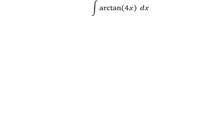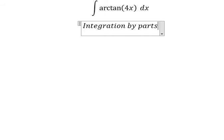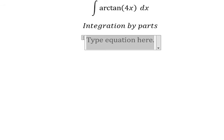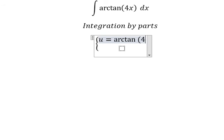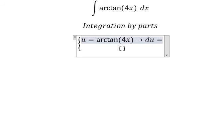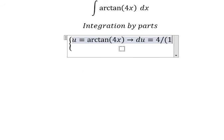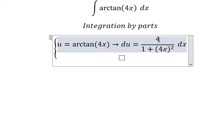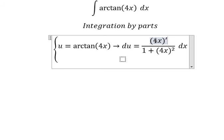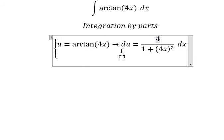Hello everybody, so today I want to show you how to answer this one. We can use integration by parts, so I will put u equals arctan(4s). Then we need to do the first derivative for both sides, and we have 4 over 1 plus 4s squared — that is the first derivative of arctan(4s) — so we have du equals 4 ds.